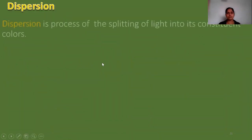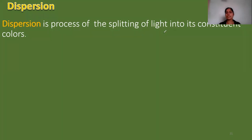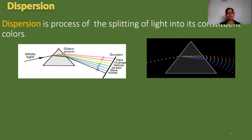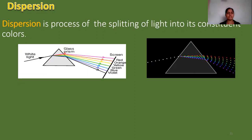What is dispersion? Dispersion is the process of splitting of light into its constituent colors. White light is converted into 7 colors. We use a prism here. White light is incident on one surface of the prism, and it refracts and emerges out. We get 7 colors.